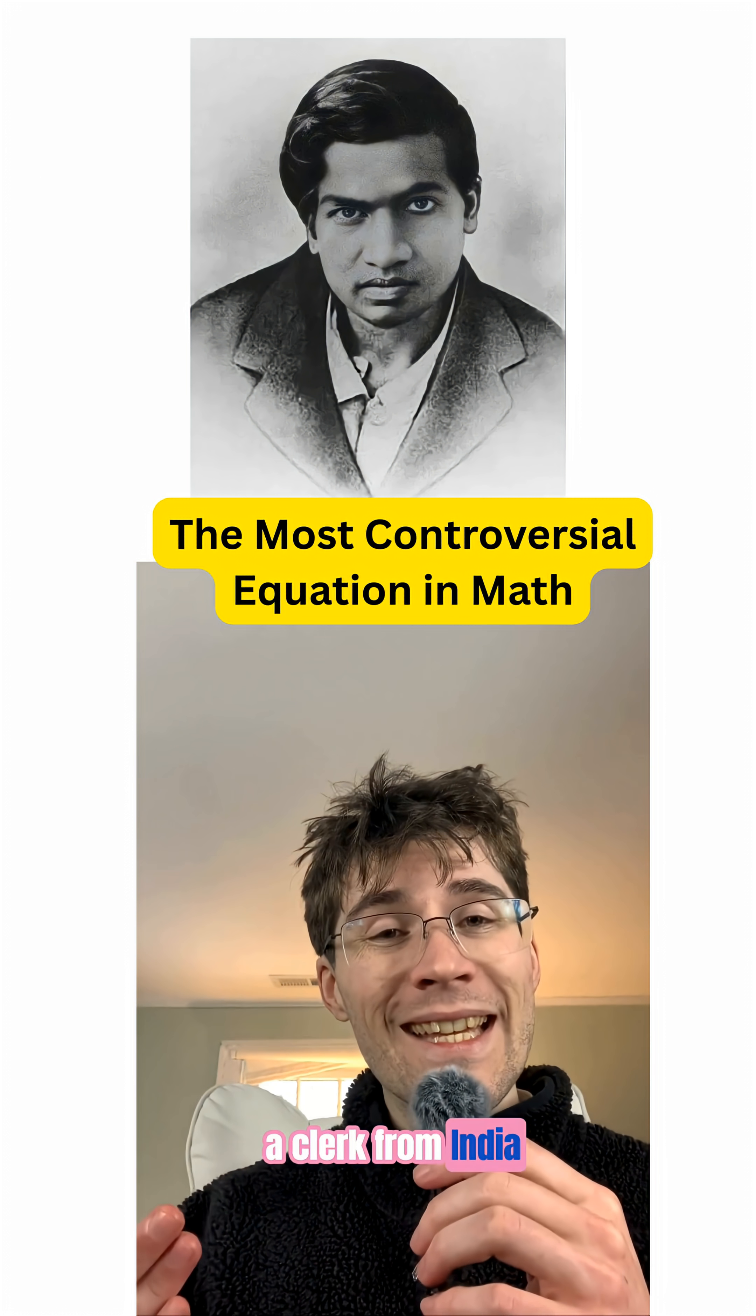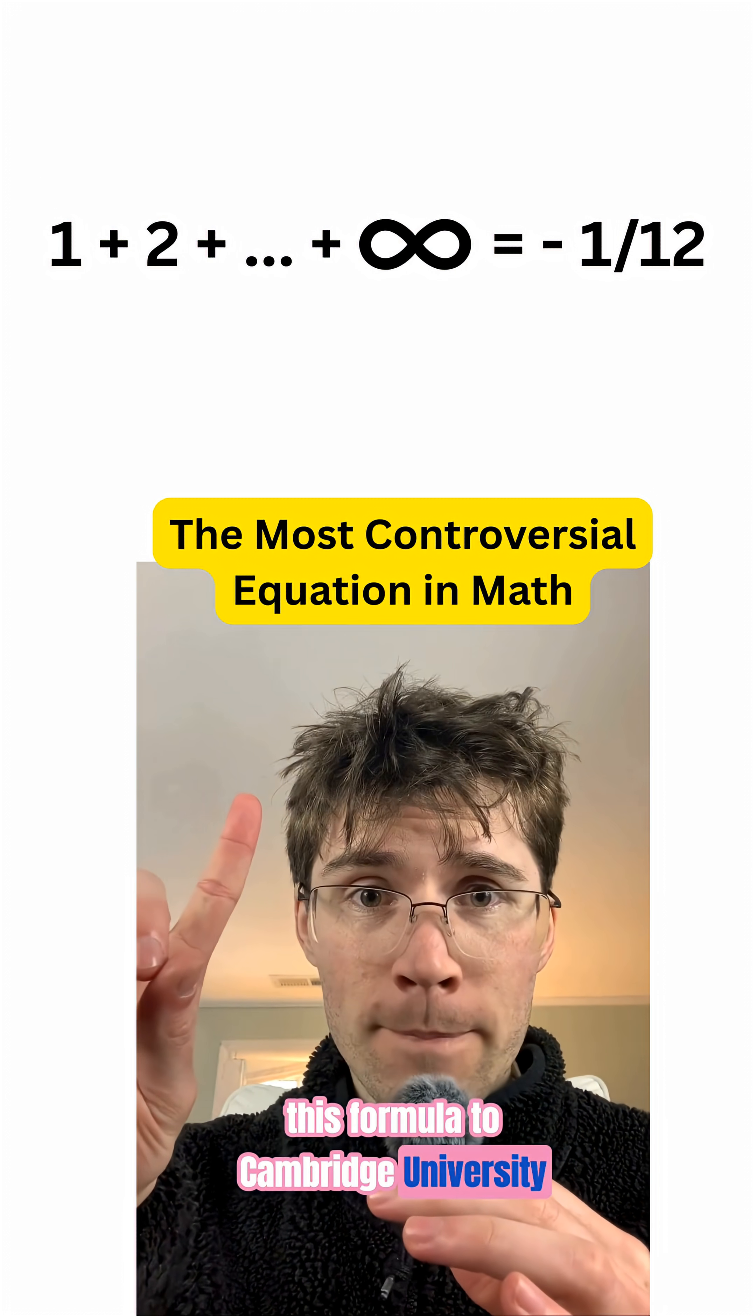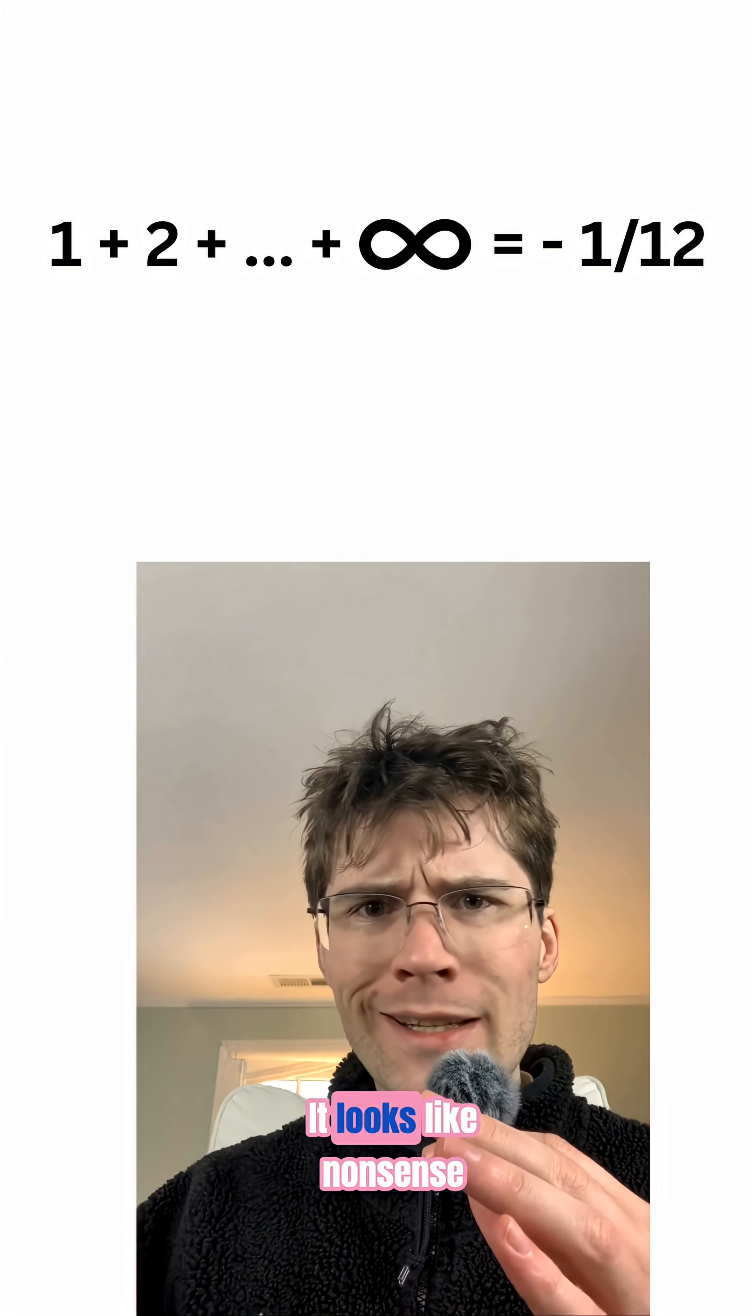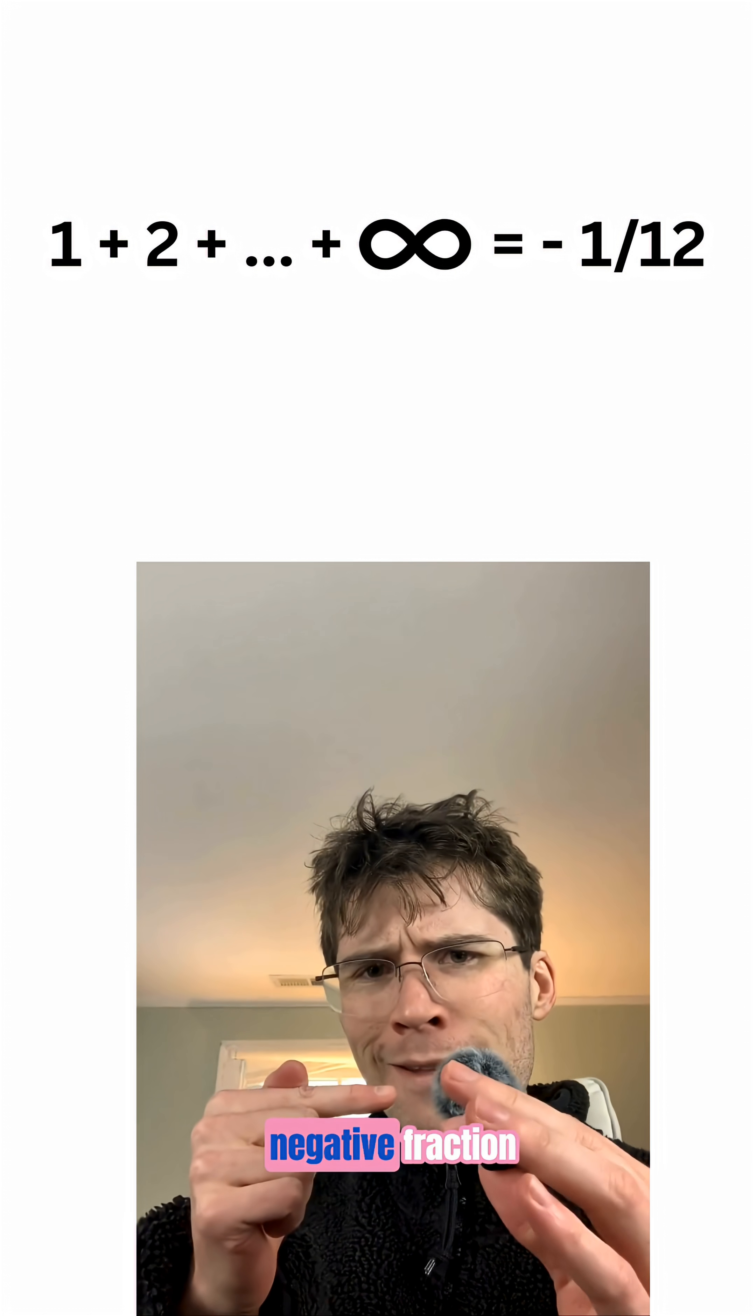In 1913, a clerk from India named Srinivasa Ramanujan sent this formula to Cambridge University. The professors thought it was a prank. It looks like nonsense. How can positive numbers add up to a negative fraction?